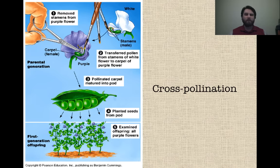What he did — and this is basically what he did with cross-pollination — he took little bits of the stamen from a purple flower on one pea plant and used it to pollinate the white flower on another plant. He wanted to use the pollen from the purple to pollinate the white and then see what would happen. So he examined the offspring after that. Cross-pollination is the key.